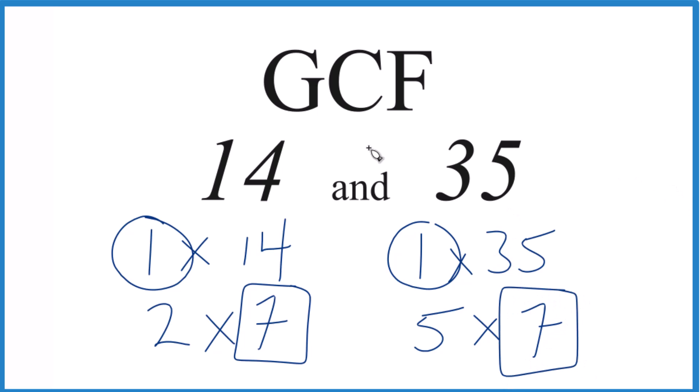So in answer to our question, the greatest common factor for 14 and 35, that's going to be 7.